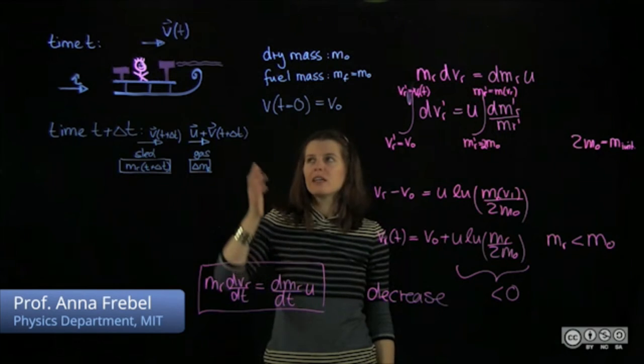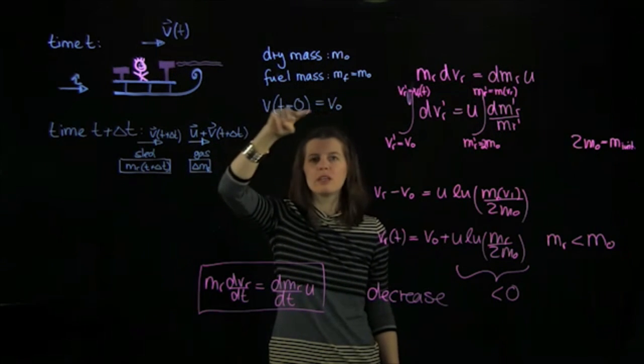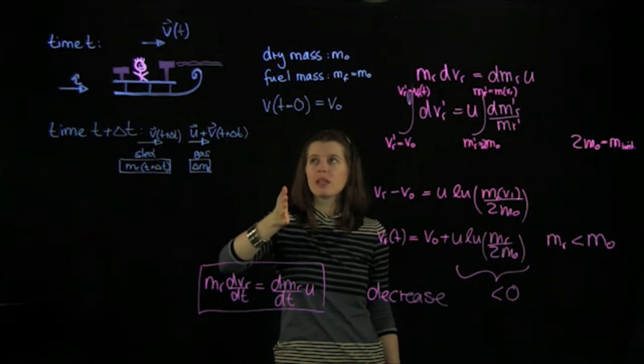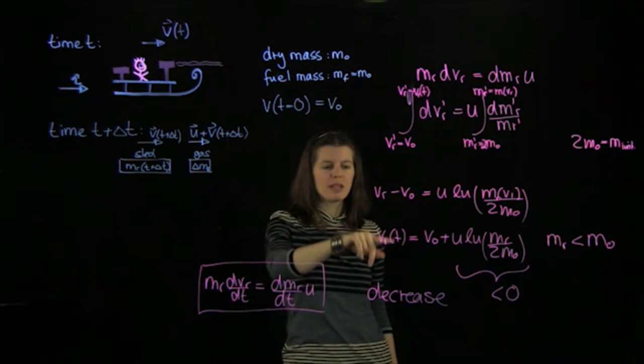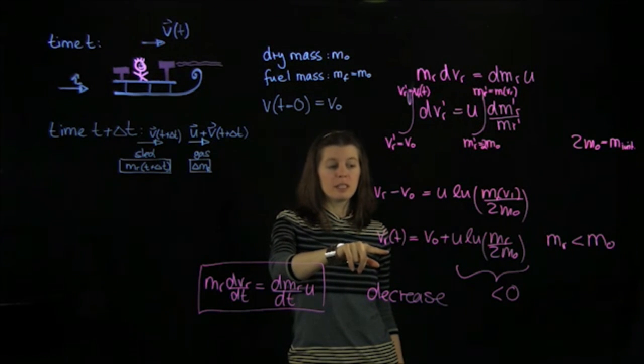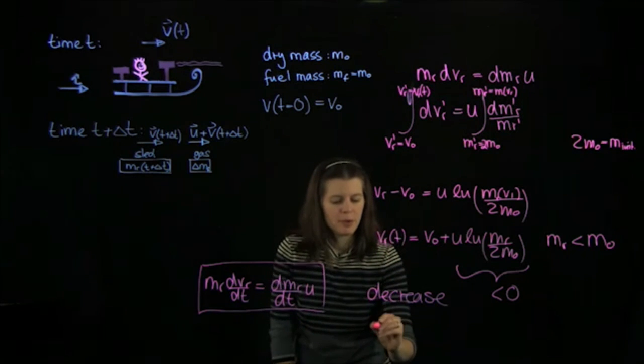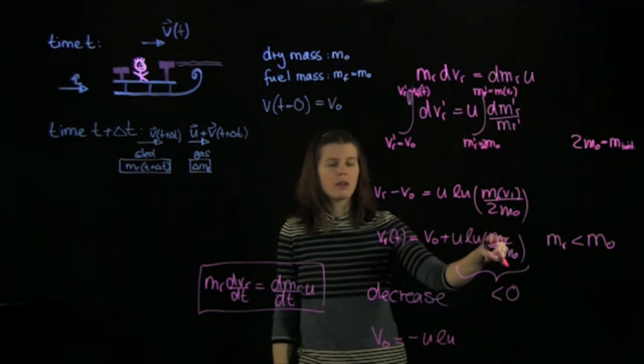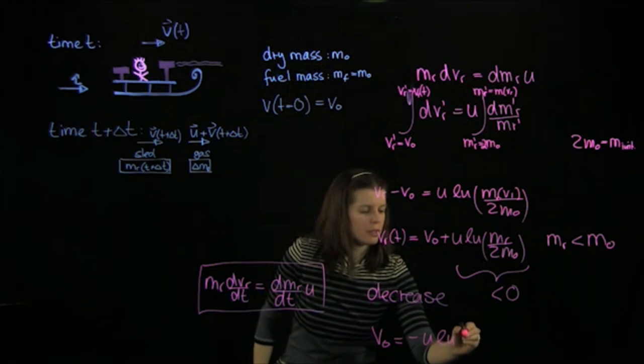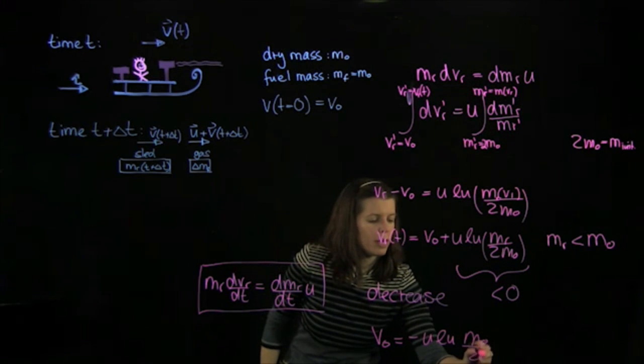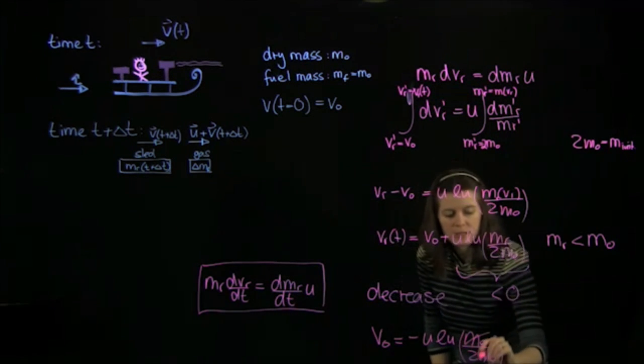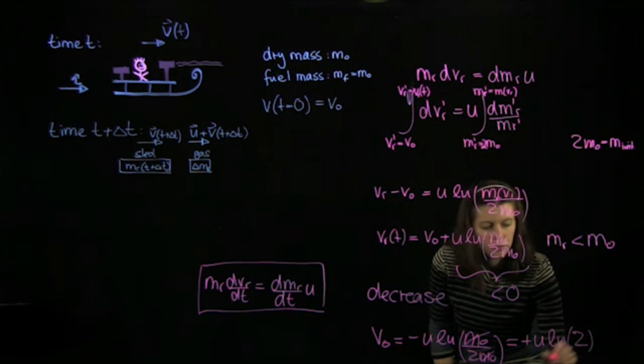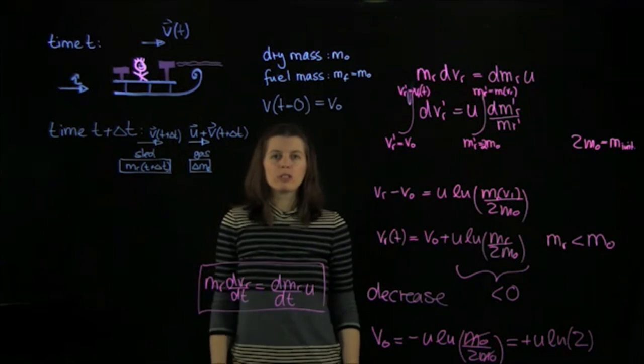So the last question we can ask is, what was that v0 here initially, of the sled, making use of the fact that the sled comes to a stop at the time that the fuel is all used up. That means that our final velocity here is 0. We'll bring v0 to the other side. And then we get minus u ln. And the rocket mass, by then, is just the dry mass, m0 over 2m0. And that cancels out here. And we can say that is plus u ln of 2. So that was the velocity that the sled was going with.